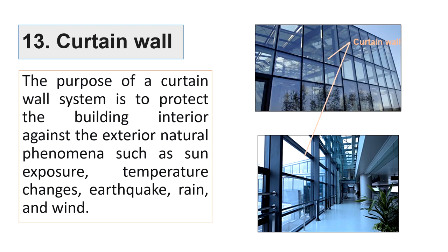The thirteenth and last type is curtain walls. These types of walls look like a curtain, which is why they are named curtain walls. Curtain walls are constructed on the outer faces of a building. Their purpose is to protect the interior spaces from exterior natural phenomena such as rain and sunlight, and they also increase the aesthetic beauty of the building.